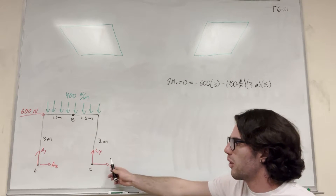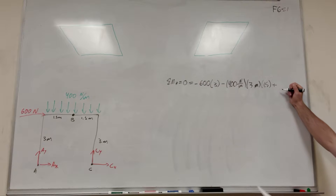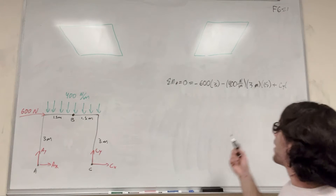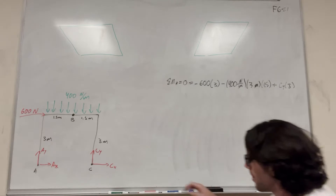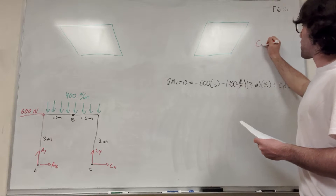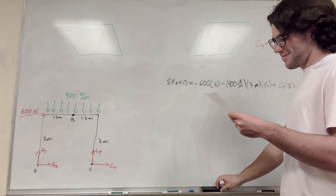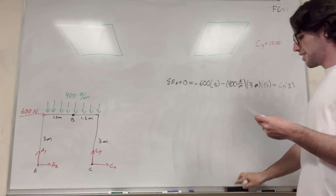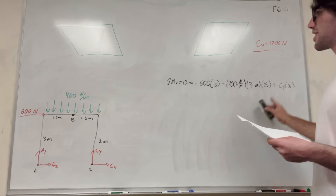Now what we have left is C of Y. C of Y is pushing upward, so it's going to create a counterclockwise moment, and we add C of Y times its distance in the X direction, which is three meters — because 1.5 plus 1.5 is three meters. Solving for C of Y, you get that C of Y is equal to 1,200 Newtons. That's how you find C of Y.